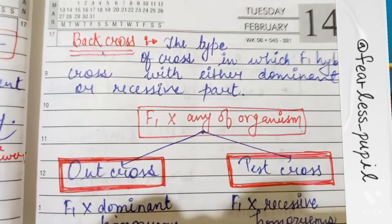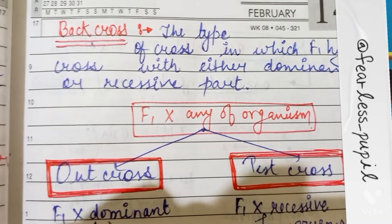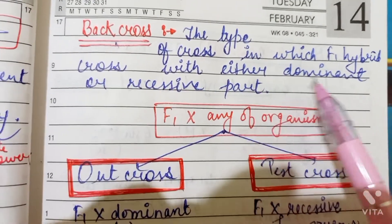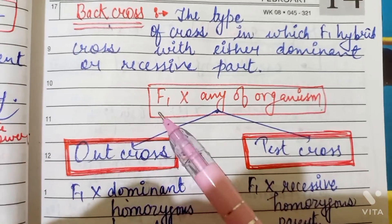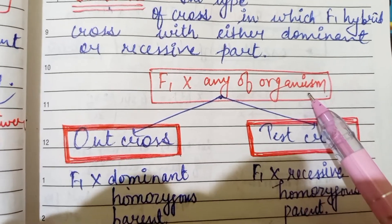Hello, today we will be studying backcross. Now the backcross is that type of cross in which F1 hybrid is crossed with either dominant or recessive parent. F1 is crossed with any organism, either it is dominant or recessive.